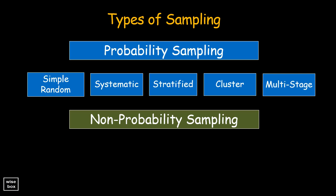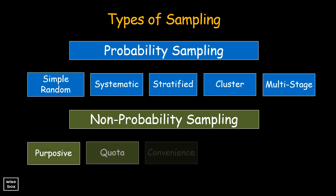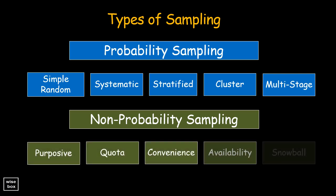Sampling methods under non-probability sampling include purposive, quota, convenience, availability, and snowball.